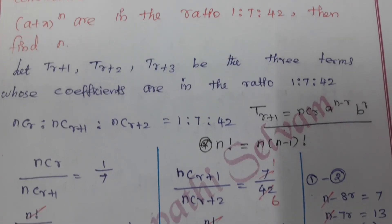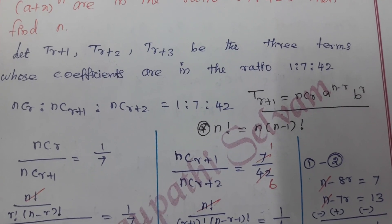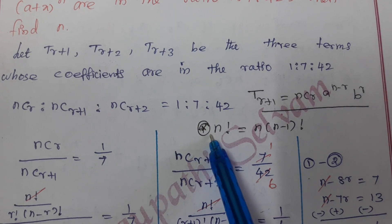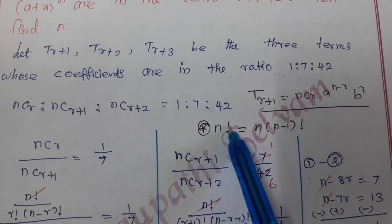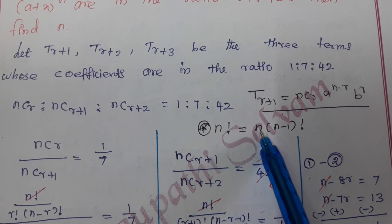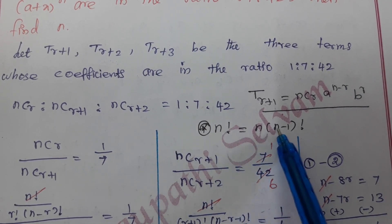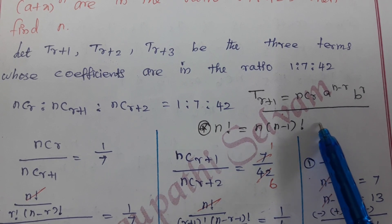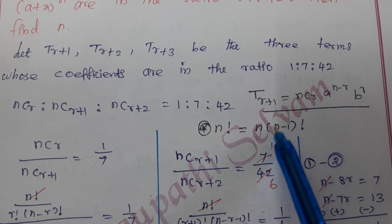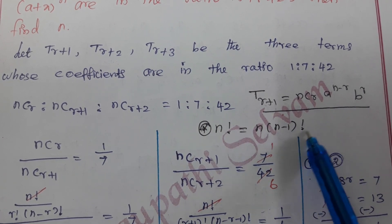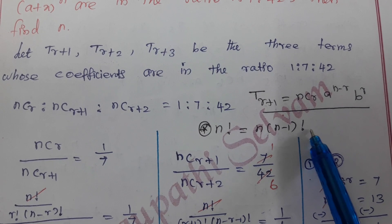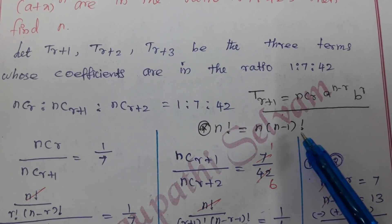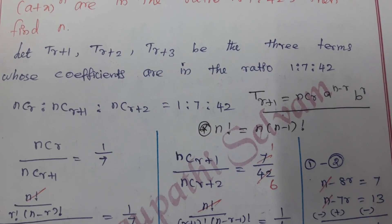Now, using the factorial formula — n factorial equals n × (n−1) × (n−2) factorial — we proceed with the calculation.